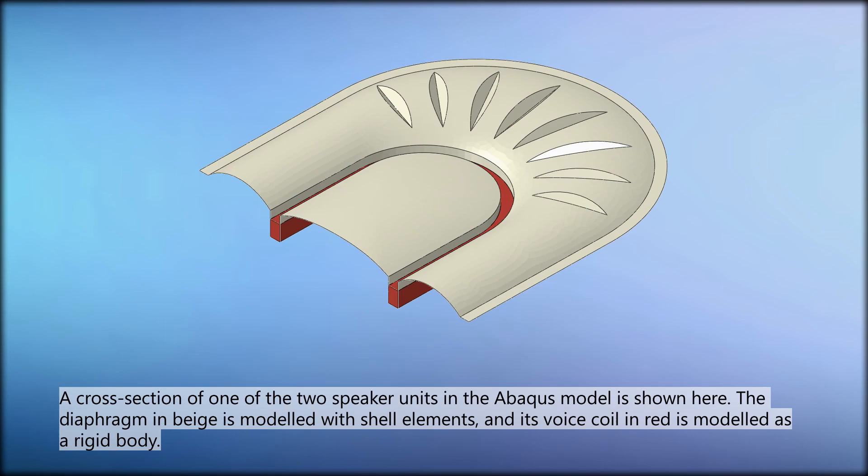A cross-section of one of the two speaker units in the Abacus model is shown here. The diaphragm in beige is modeled with shell elements, and its voice coil in red is modeled as a rigid body.